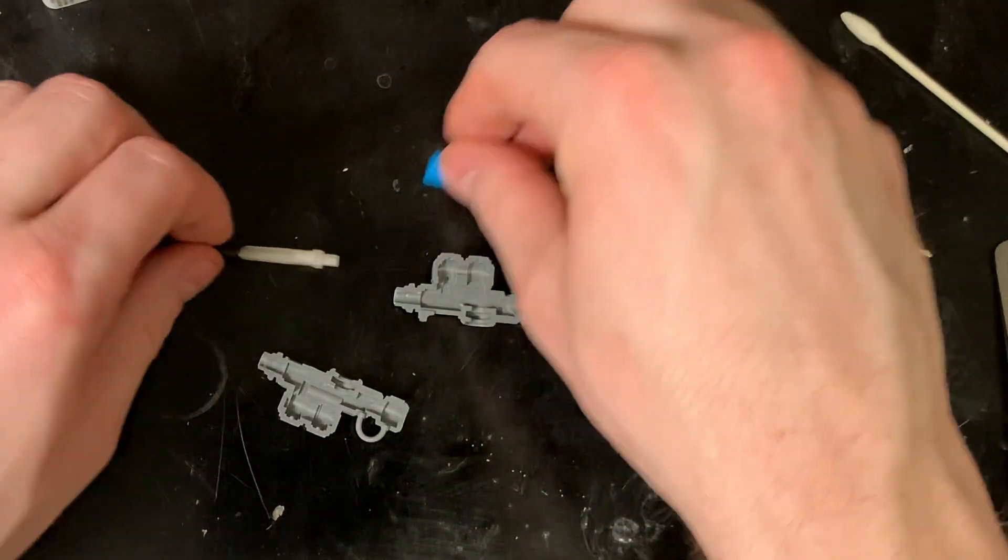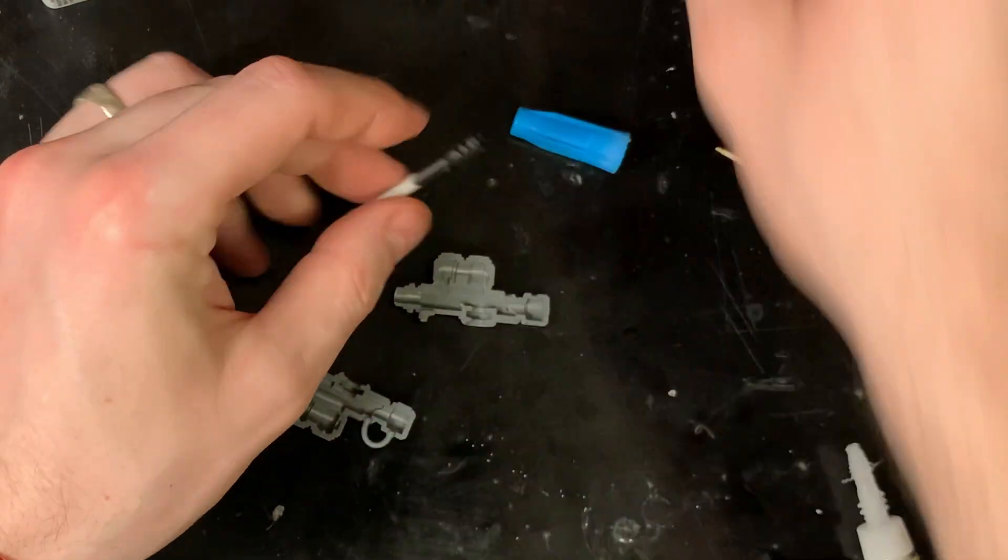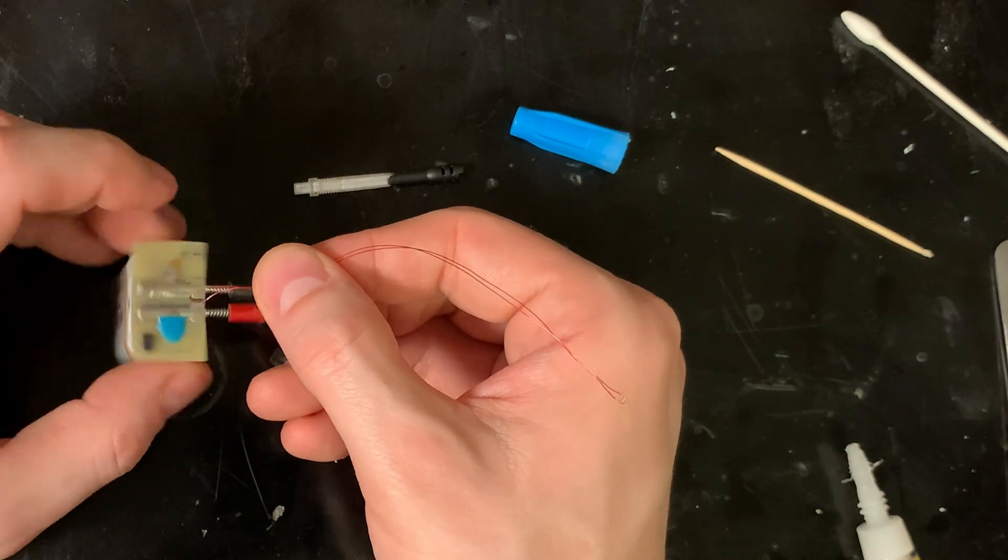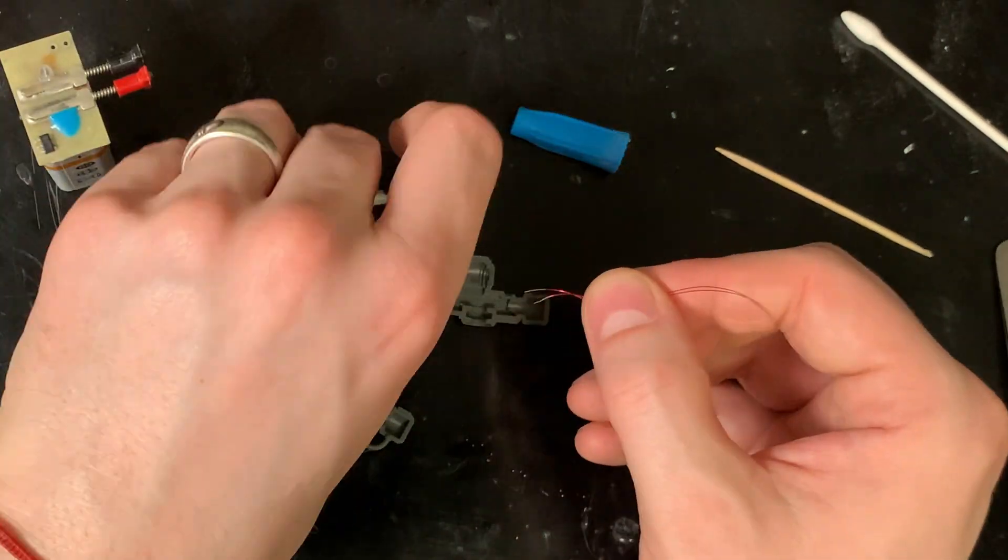And that'll bring us to the autocannons of the Armiger. I'm only going to show you how I did one, but again, I'm using a 3D printed part that I've designed myself. So Games Workshop, this is totally legal.